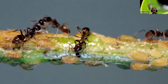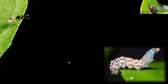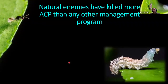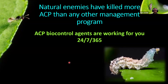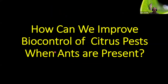You can see Tamarixia radiata here — the ants just come in, kill them, and take them back to the nest as a protein source for the brood. Based on everything that we have done, our natural enemies have killed more Asian citrus psyllid than any other management program. Our natural enemies are everywhere, working for you 24/7, 365 days. The control they are providing is very high and it is free. You can get into backyards where spray crews cannot access. We've been trying to come up with ways to make these impacts even greater. So how can we improve biological control of citrus pests when ants are present?